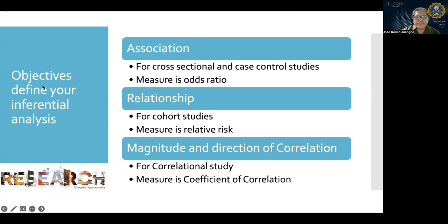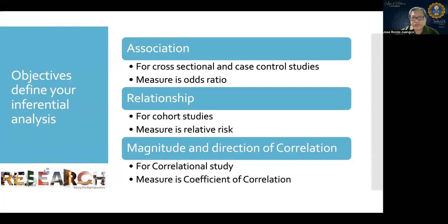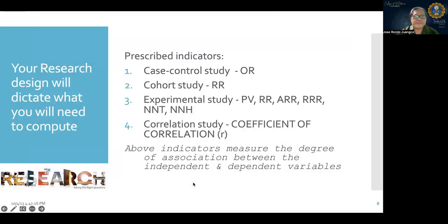Your objectives define your inferential analysis. If your objective is to determine association, you are looking at cross-sectional and case-control study designs, and the measure is odds ratio. If your objective is to determine a cause-effect relationship, this can only be done using cohort or experimental studies, and the measure is relative risk. If your objective is to determine the magnitude and direction of correlation, you are looking at a correlational study, and the measure is the coefficient of correlation.